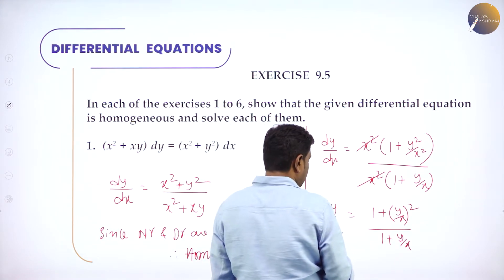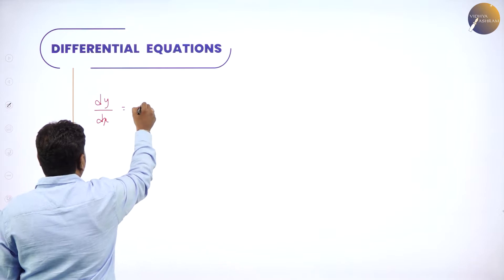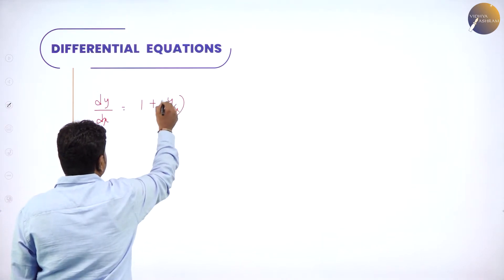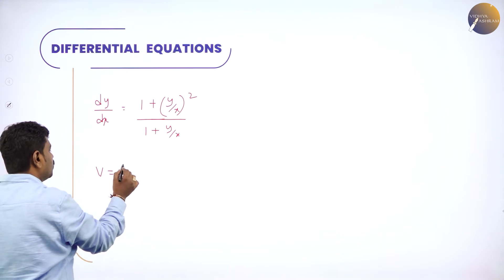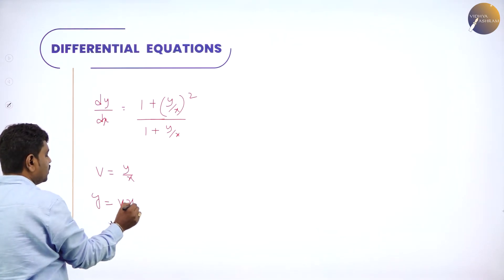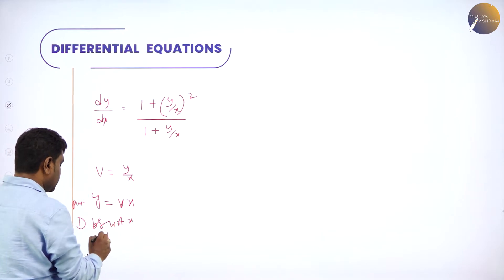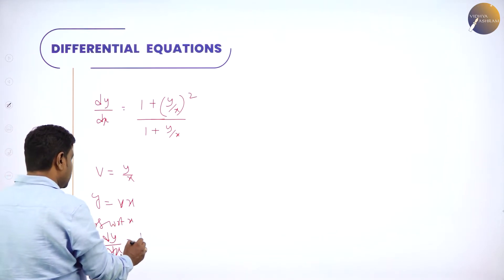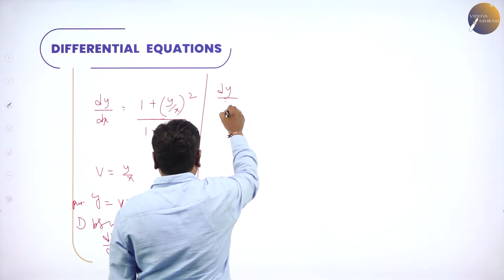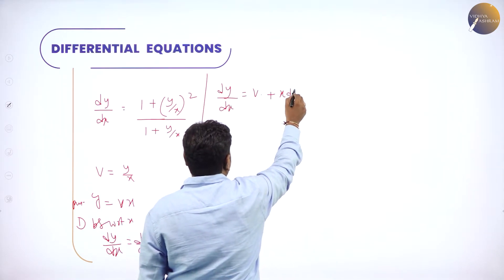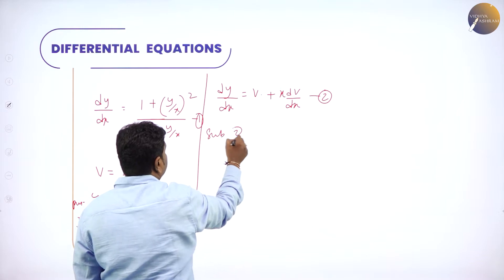Now how to solve this? Put y/x = v, or y = vx. Differentiate both sides with respect to x. LHS becomes dy/dx; RHS by product rule becomes v times 1 plus x times dv/dx. Call this equation 2; call the original equation 1. Substitute equation 2 into equation 1.